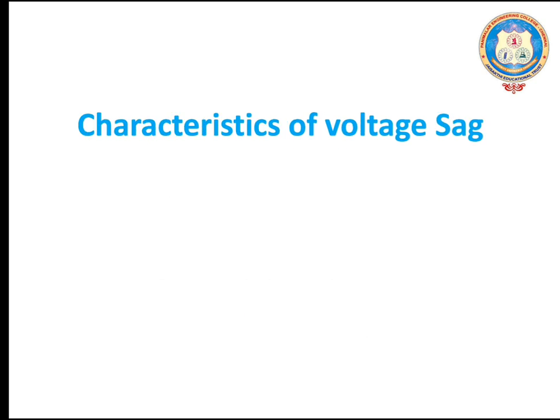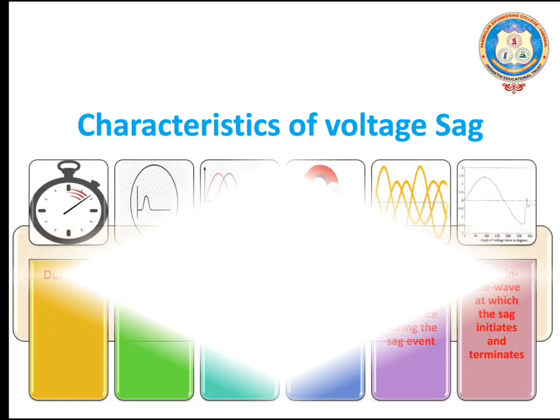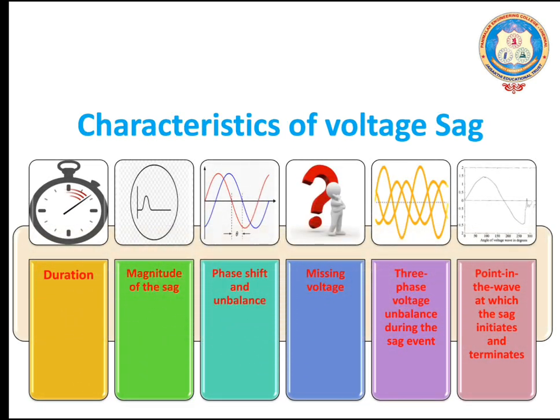What are the characteristics of voltage sag? Duration, magnitude of the sag, phase shift and unbalance, missing voltage, three-phase voltage unbalance during the sag event, and point in the wave.